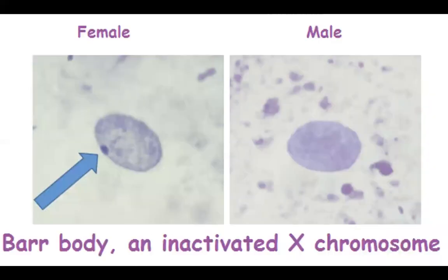The dark spot in this photo shows the Barr body that Lynn noticed when one X chromosome becomes deactivated. As you can see, the male cell does not have that.